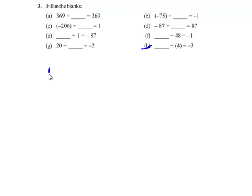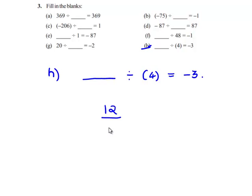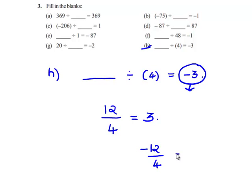We will see the next problem. The question is: when any integer divided by 4 gives the answer negative 3. We know that when 12 is divided by 4, we get the answer 3. But we can see that we have a negative sign in the answer, which shows that when two integers of opposite sign are divided, we always get a negative sign. Which implies, when negative 12 is divided by 4, we get negative 3. Therefore, the answer is negative 12.